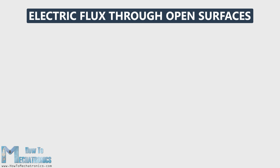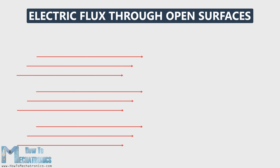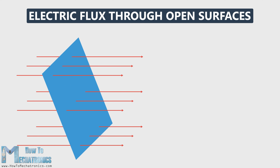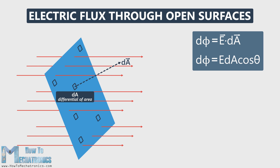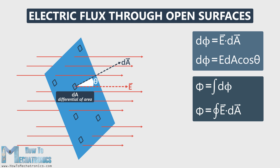First we will take a look at an example of electric flux through an open surface. These red lines represent a uniform electric field. We will bring into that field a rectangle, which is an open area, and we will divide the area into very small elements, each with size dA. dA is called a differential of area. Now we are going to make the area dA a vector with a magnitude dA. The vector direction is always perpendicular to the small element dA. The electric flux that passes through this small area dPhi, also called a differential of flux, is defined as a dot product of the magnitude of the electric field E and the magnitude of the vector area dA, times the cosine of the angle between these two vectors theta. The total flux is going to be the integral of dPhi, or the integral over the entire area of E dot dA.